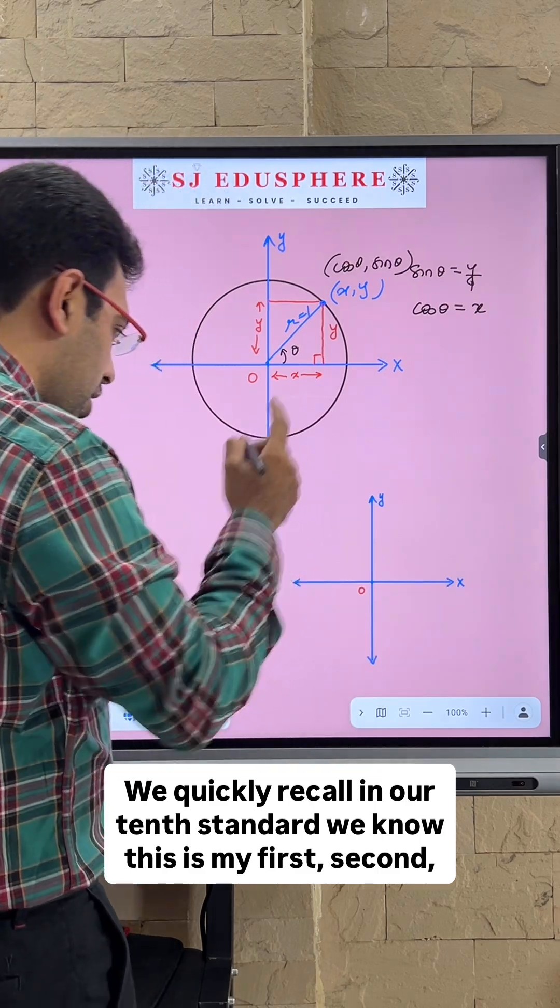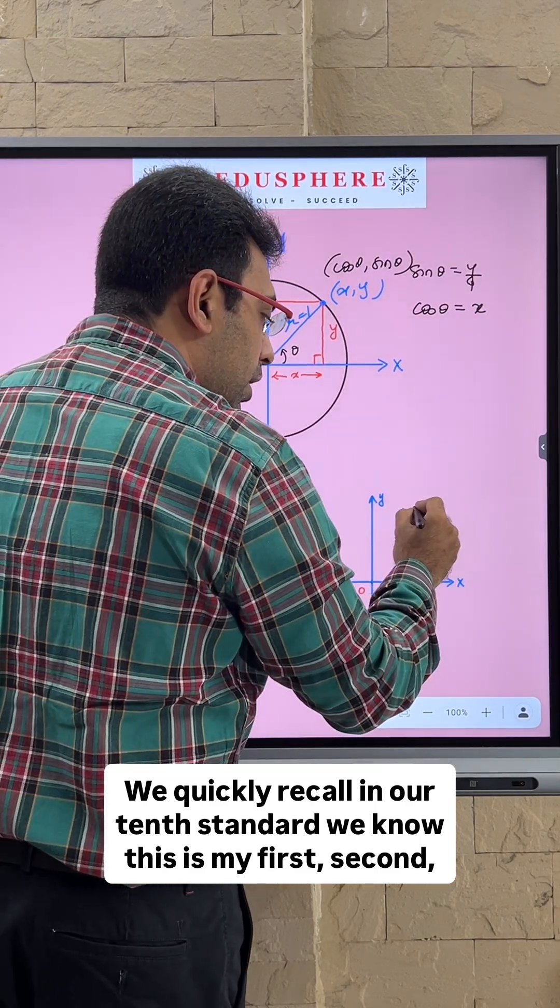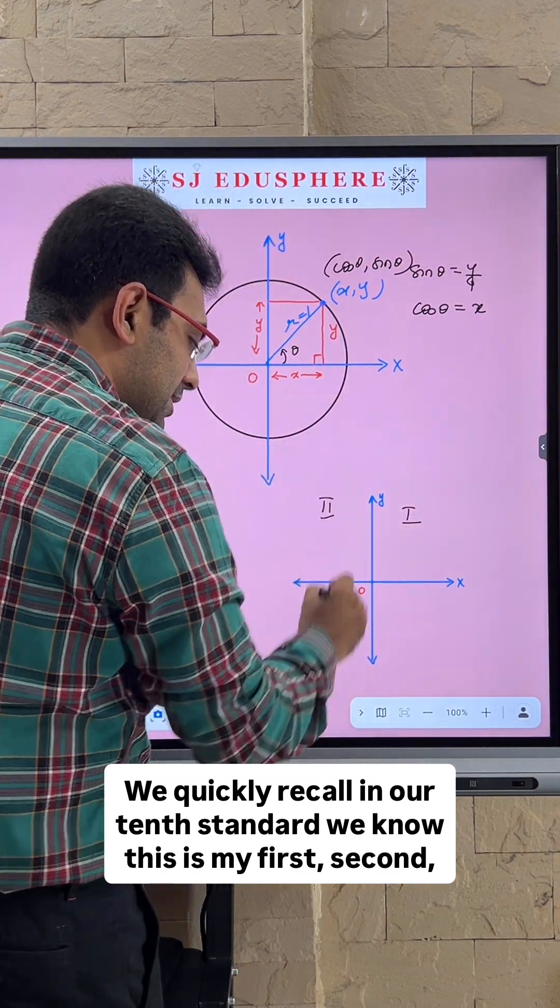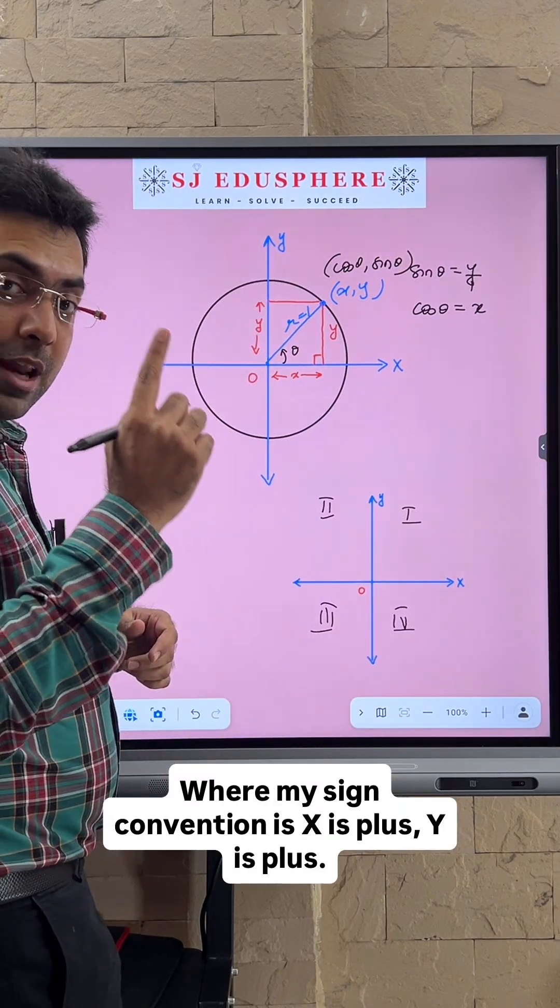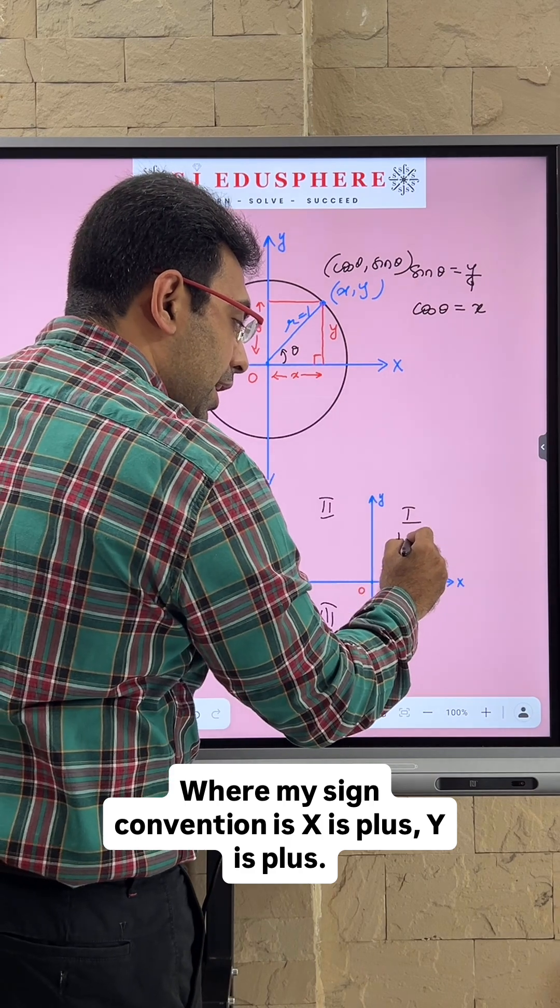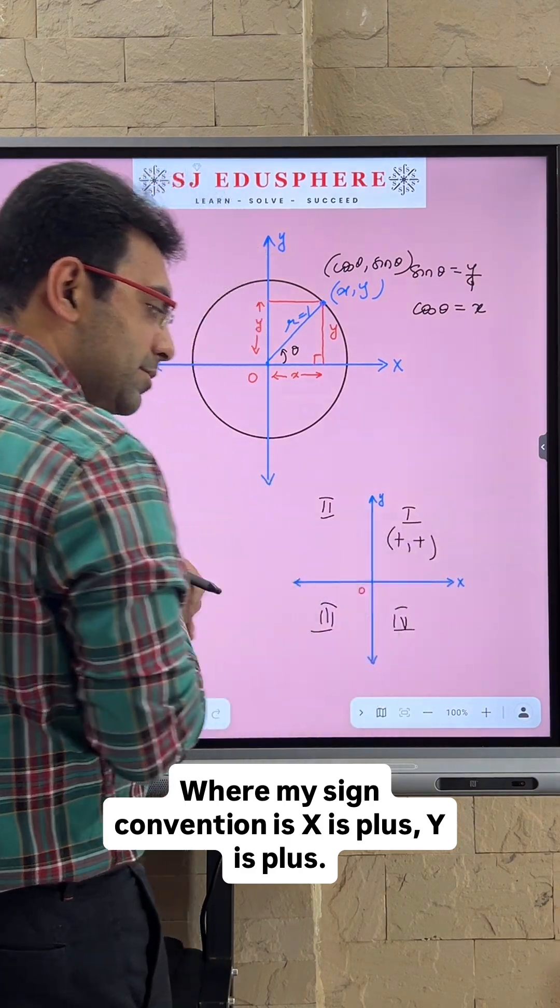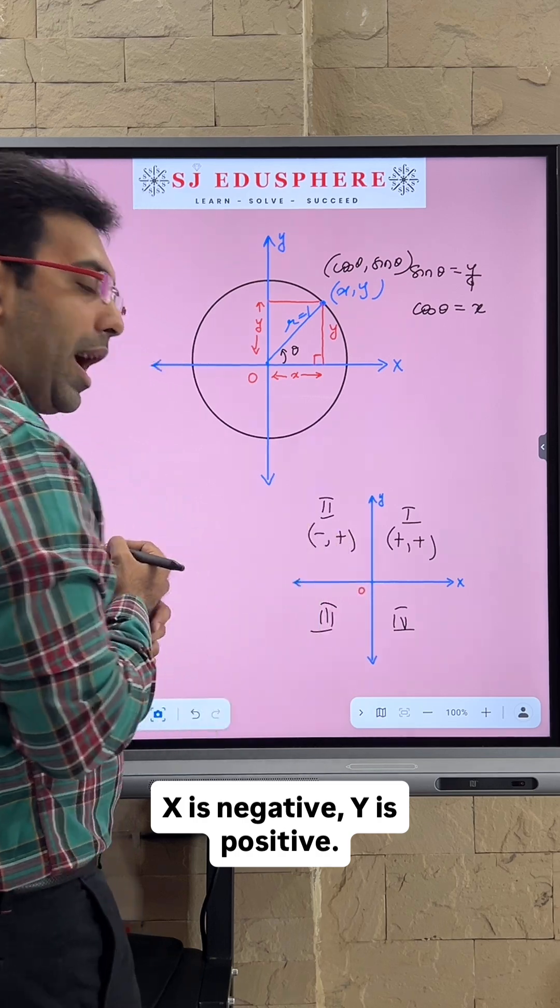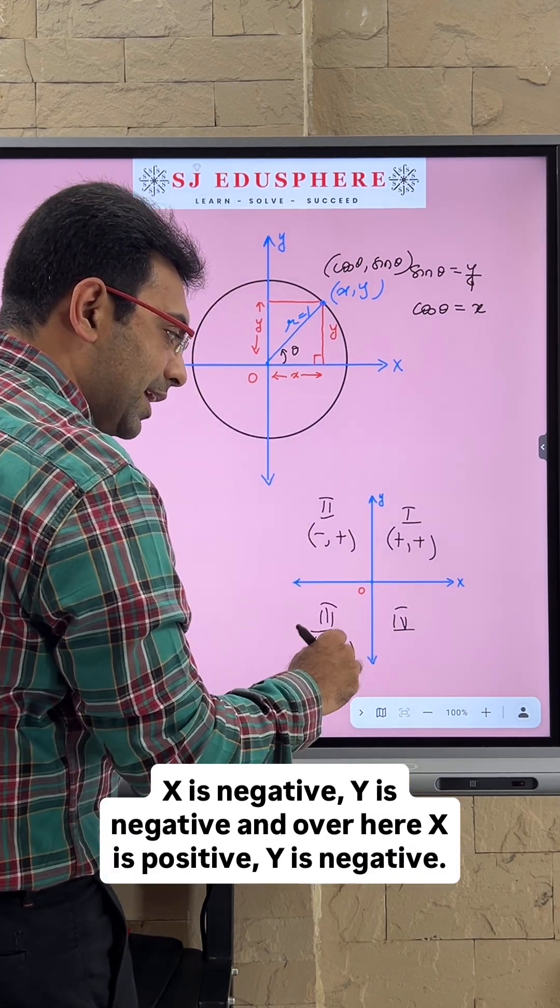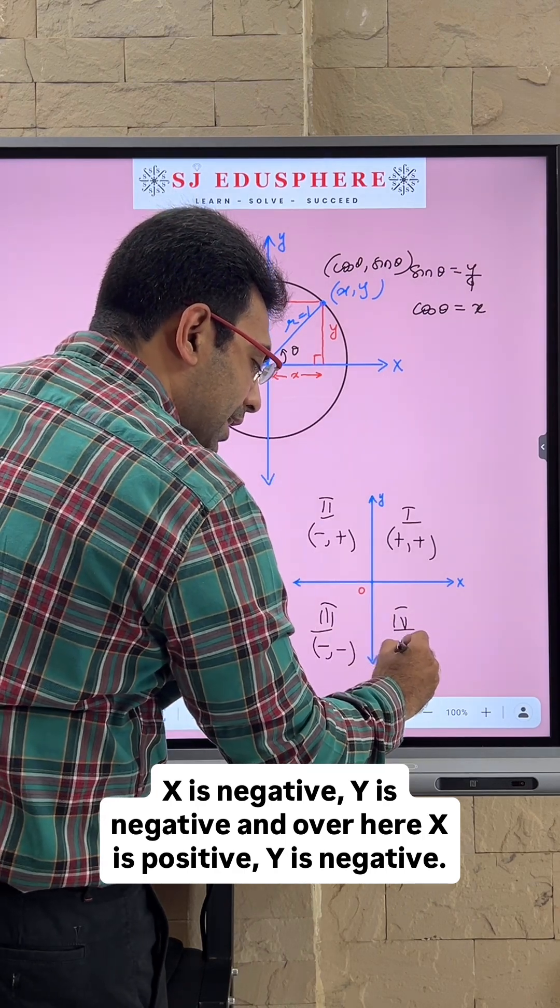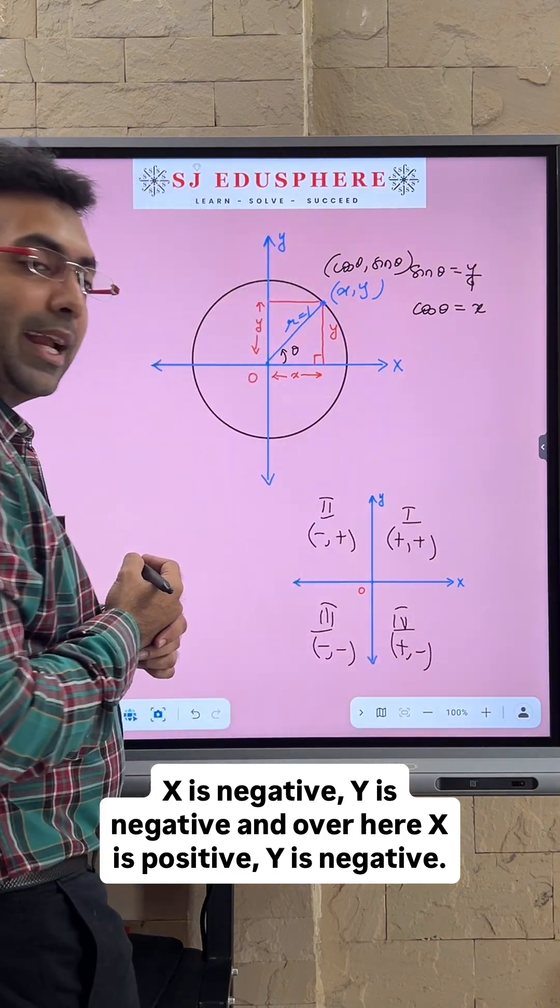We quickly recall from 10th standard that this is the first, second, third, and fourth quadrant, where my sign convention is: x is positive, y is positive; x is negative, y is positive; x is negative, y is negative; and x is positive, y is negative.